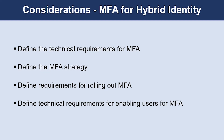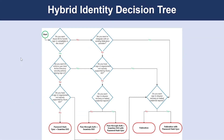So, once you go through these considerations, then we can identify what type of MFA is required for this hybrid identity. And let's understand the hybrid identity decision tree. This is to help us decide which authentication method is right for you, by using a decision tree. It helps you determine whether to deploy cloud or federated authentication for your Azure AD hybrid identity solution.